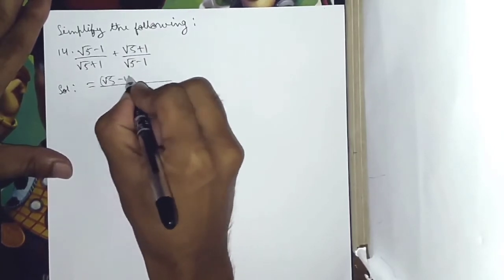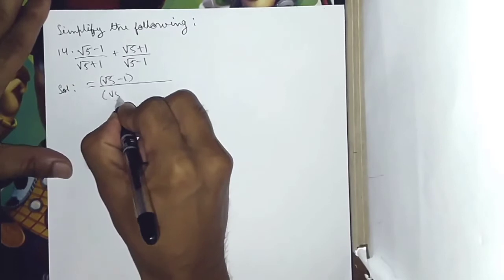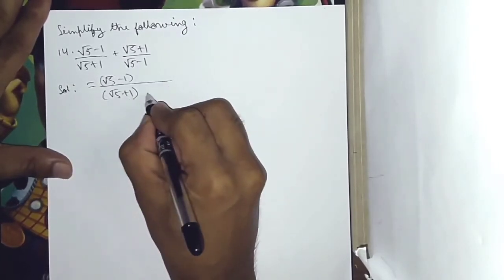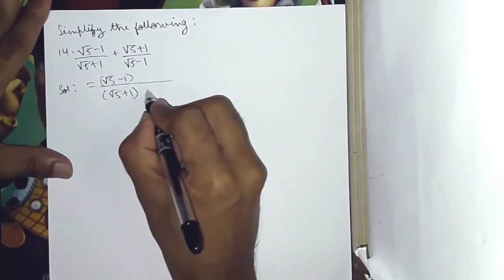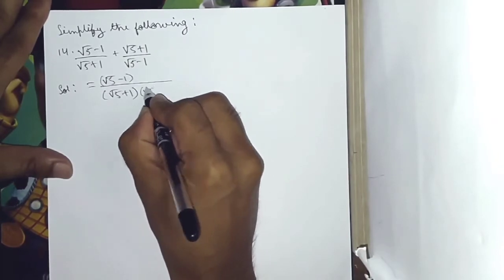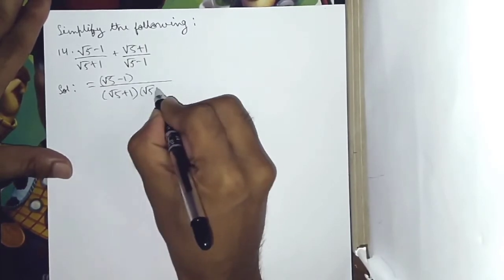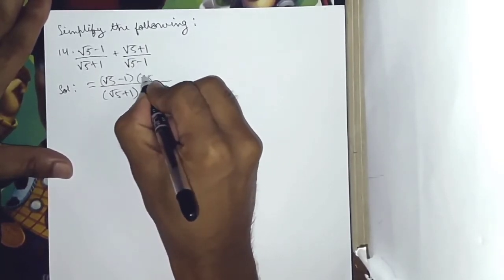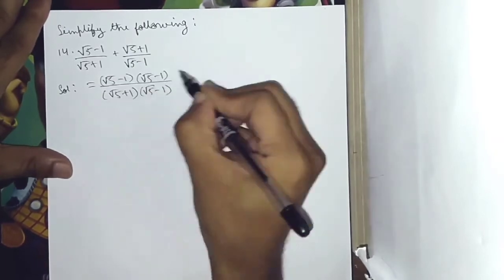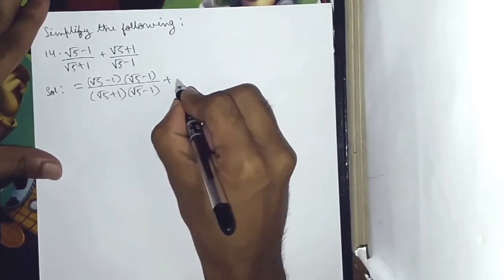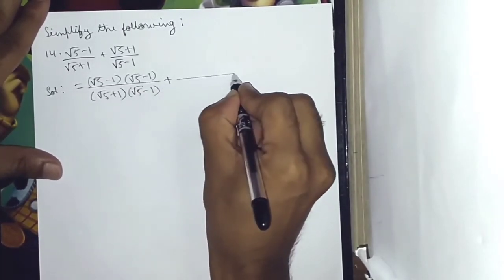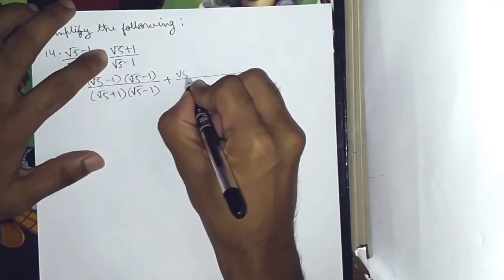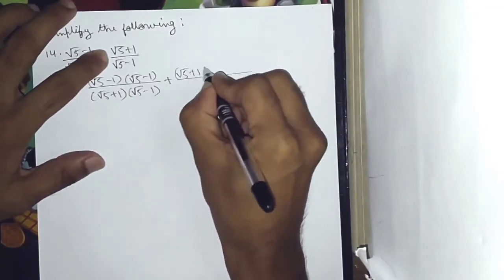Root 5 minus 1 on the left, root 5 plus 1 on the right. So the expression becomes root 5 minus 1 all squared over root 5 plus 1 into root 5 minus 1, plus root 5 plus 1 all squared over root 5 plus 1 into root 5 minus 1.